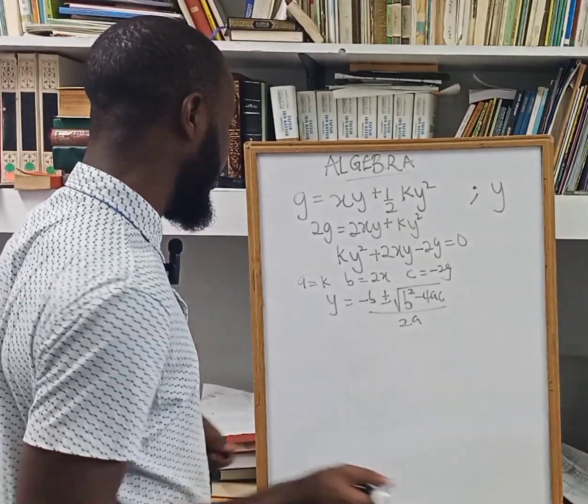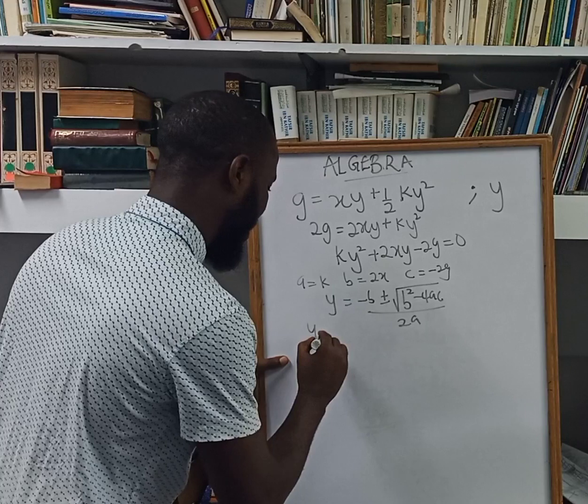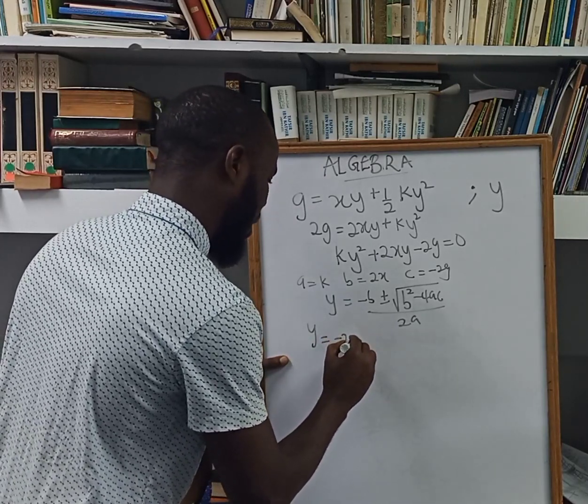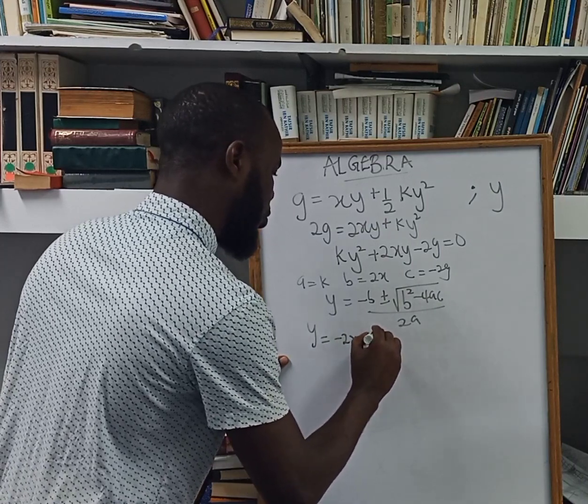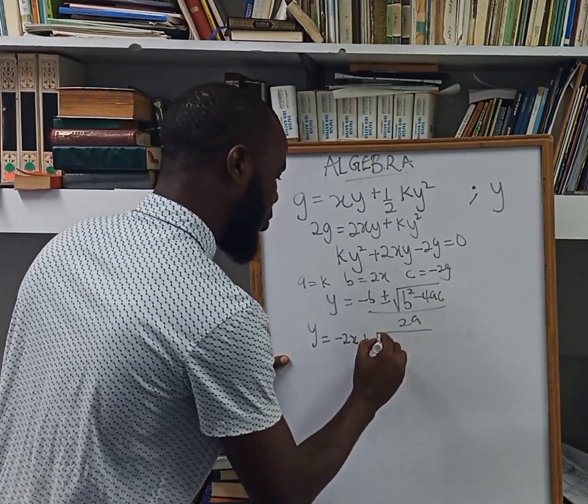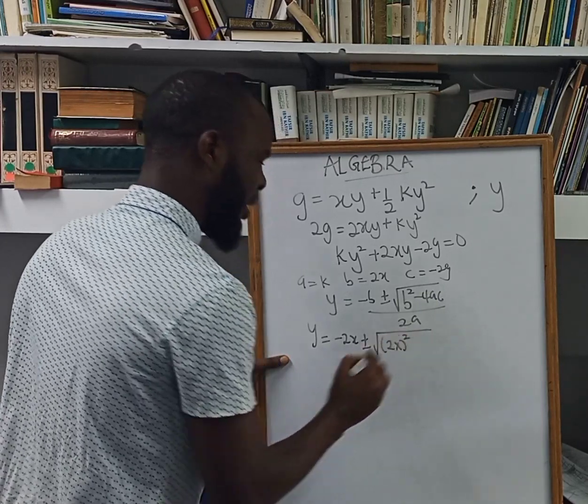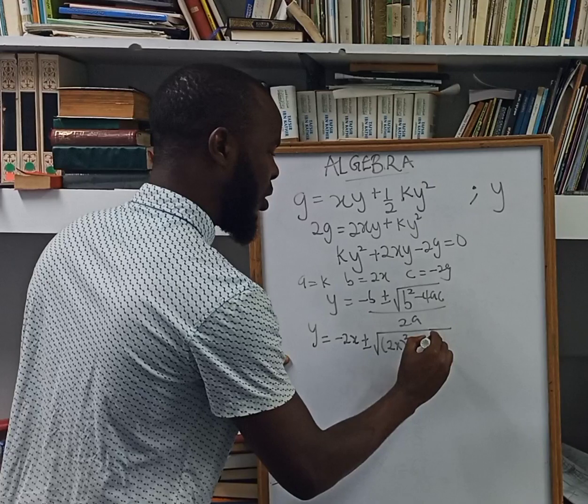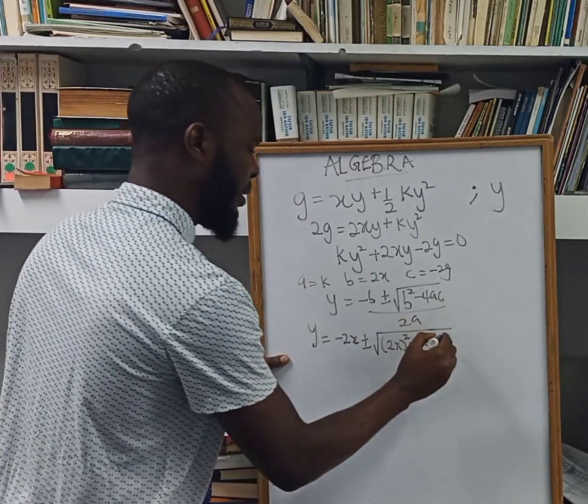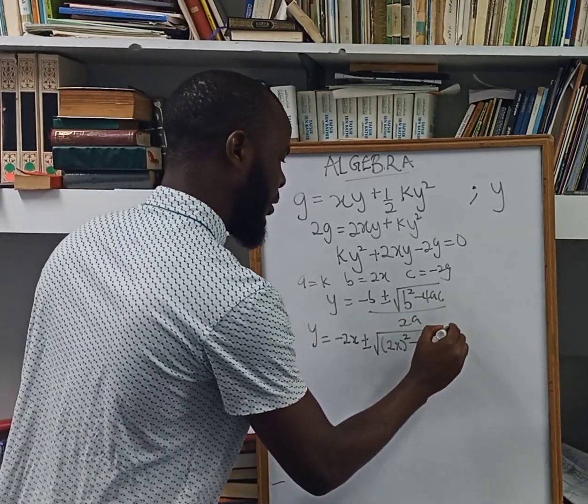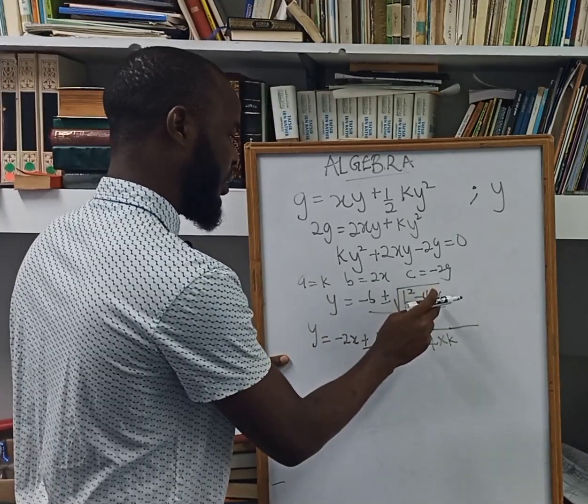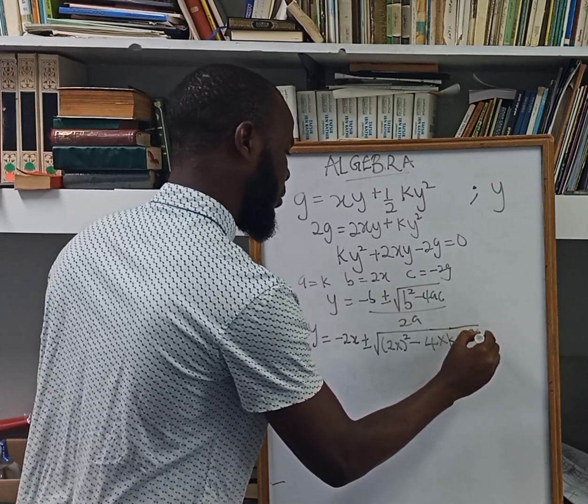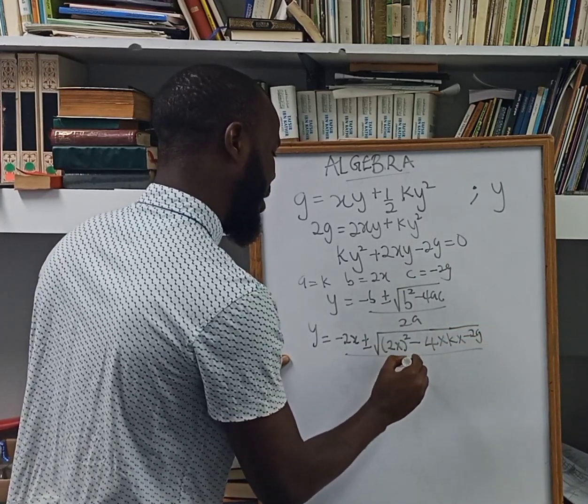So plugging in those values here, I'm going to have that my y equals negative 2x plus or minus root b squared is going to be 2x squared minus 4ac, 4 times a is k. So c is negative 2g, everything over 2 multiplied by k.